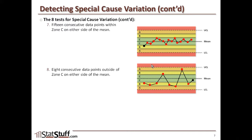This is somewhat the opposite of the previous test — we're not seeing any data points fall within one standard deviation of the mean; they all happen to be within Zone B, A, or beyond. When we see this across eight consecutive data points, it could indicate something is going on.